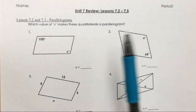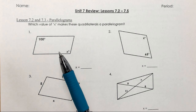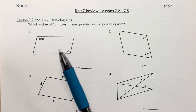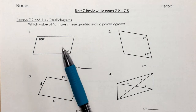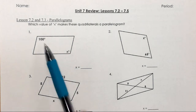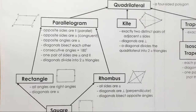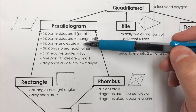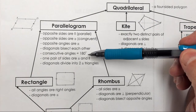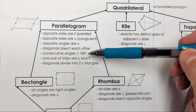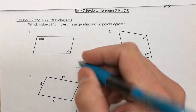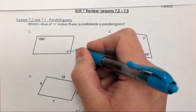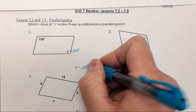If you look at number one, it says which value of x makes these quadrilaterals a parallelogram. We have angles, sides, and diagonals to focus on. This one is focusing on angles. Looking at the angle properties, opposite angles are congruent, and consecutive angles add up to 180. These angles are opposite of each other, and since they're opposite, they must equal each other. So this angle is 100 degrees, so that would be the answer for x.